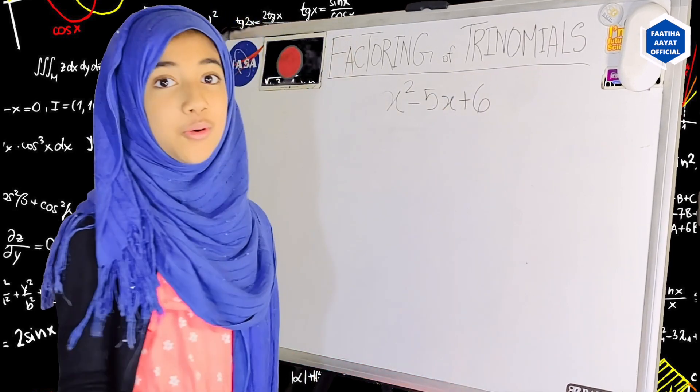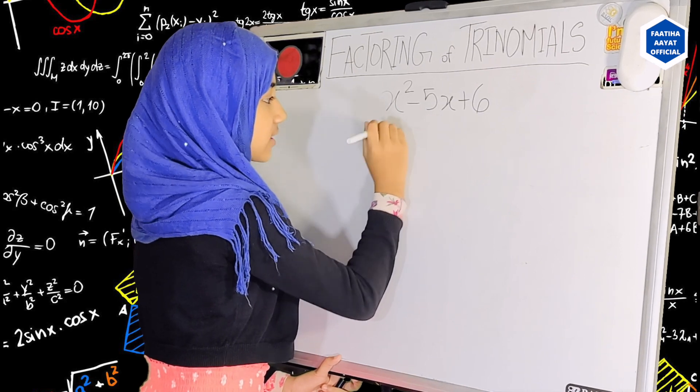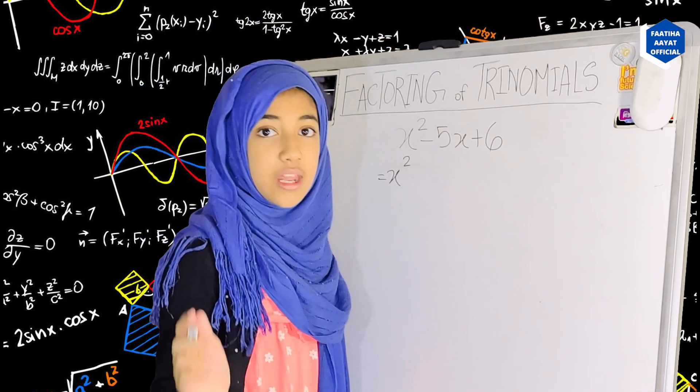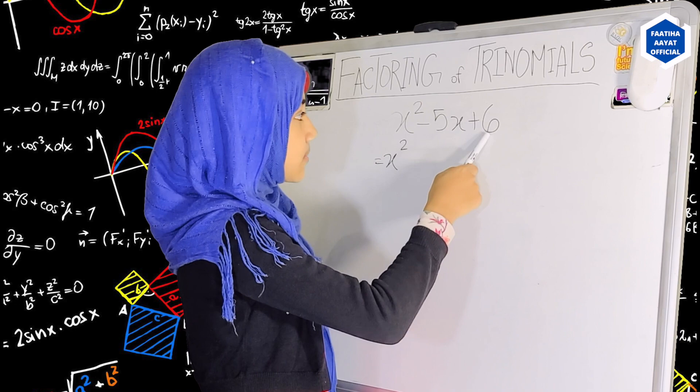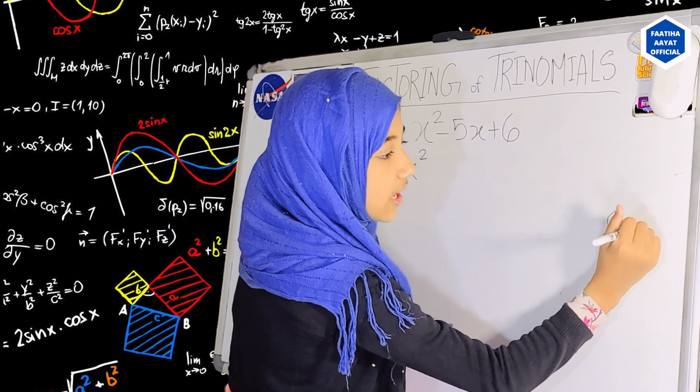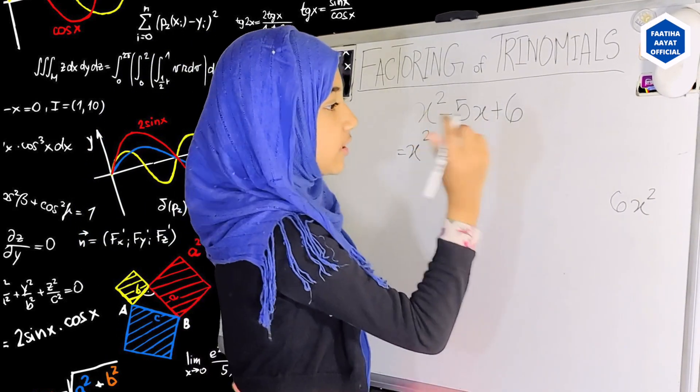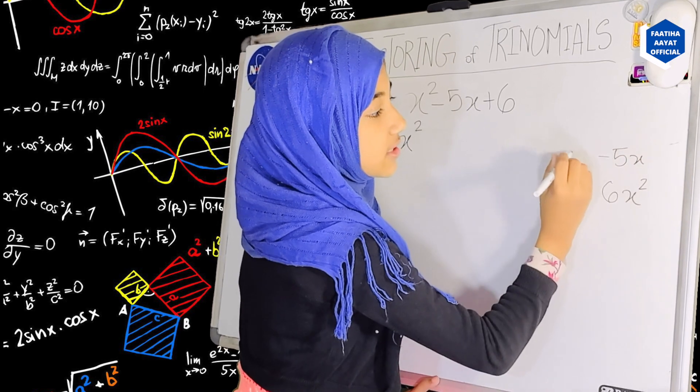So now we are going to factor this trinomial. So what we have to do is leave the x squared alone. Then what we are going to do is we are going to multiply 6 and x squared. That is 6x squared. Let me just write it off to the side.